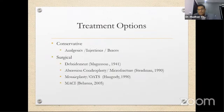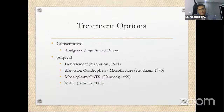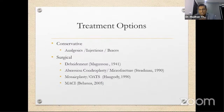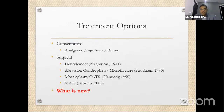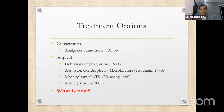Treatment options include conservative (analgesics, injections, braces) and surgical. Surgical generations include debridement by Magnusson (1941), abrasion chondroplasty and microfracture by Steadman (1990), mosaicplasty/OATS, then MACI by Briggs (2005). The newest technology is AutoCAD (AutoCart) by Arthrex — a single-stage autologous minced cartilage procedure offering quick recovery, shorter rehabilitation, and cost-effectiveness.